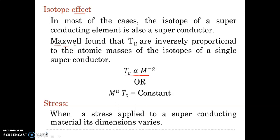In the case of the isotope effect, the superconducting transition temperature is inversely proportional to the atomic mass of the isotope. This was discovered by Maxwell. Now we will discuss all the properties of superconductors as a summary.